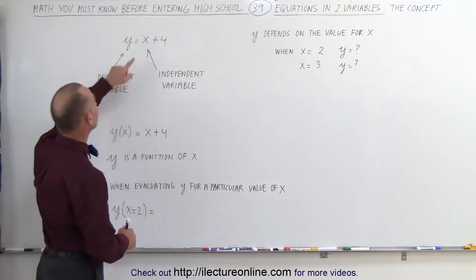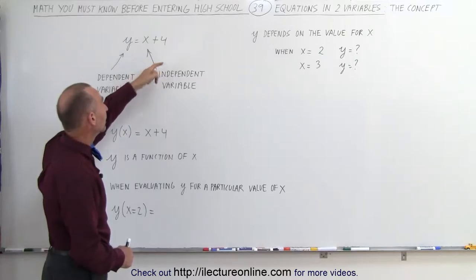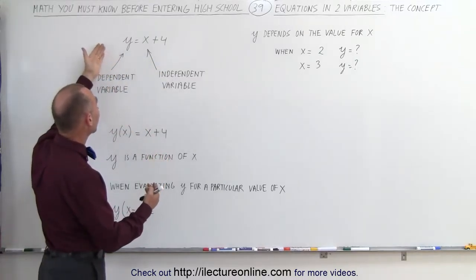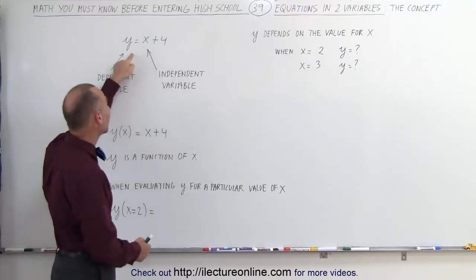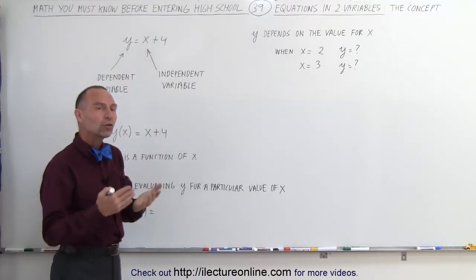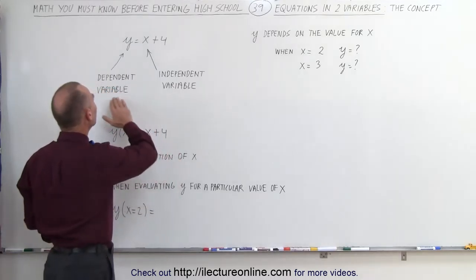When you see an equation like this, y equals x plus 4, this is an equation because it has a left side, a right side, an equal sign, and it has two variables, the variable y and the variable x. But what we usually don't talk about is that one of the two variables...